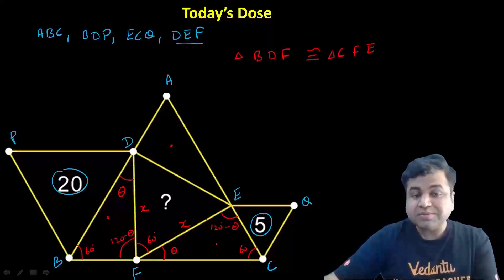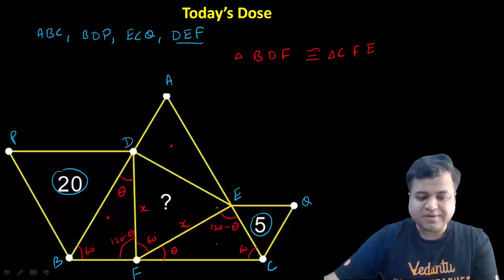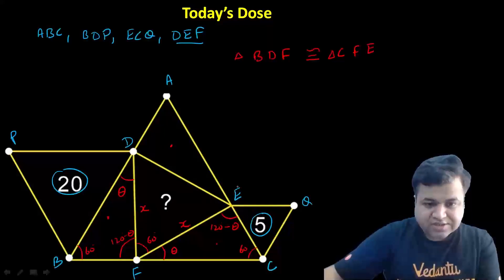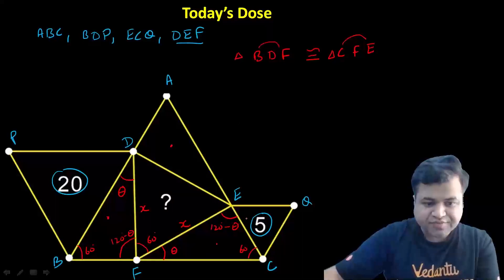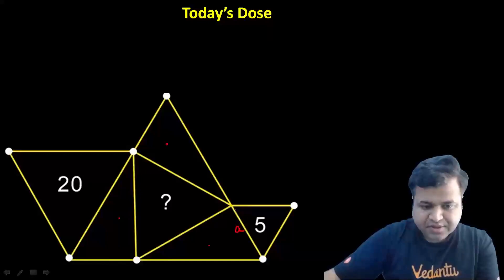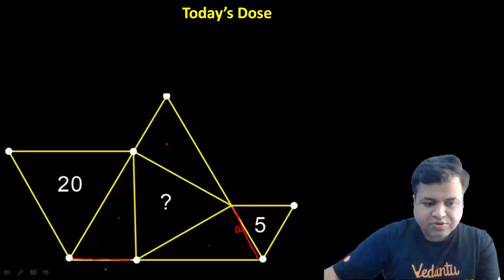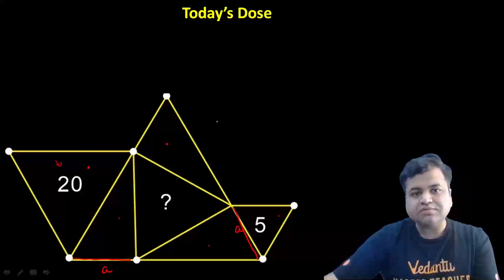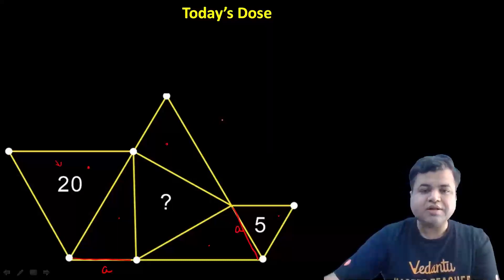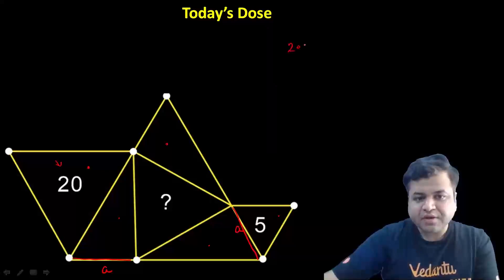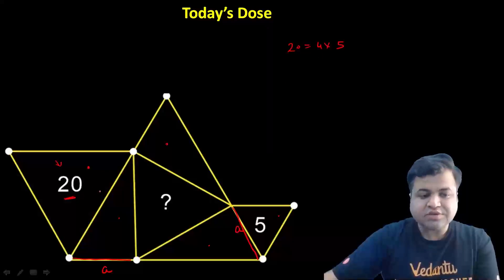Now let's use the concept that the ratio of areas of two similar triangles equals the square of the ratio of their sides. We have proved that the three corner triangles are congruent. We can say their sides are each equal to A. The two given equilateral triangles have areas 5 and 20. Since 20 is 4 times 5, the area ratio is 4, which means the side ratio is 2. So the side of the larger equilateral triangle is 2A.